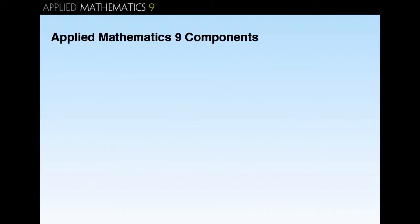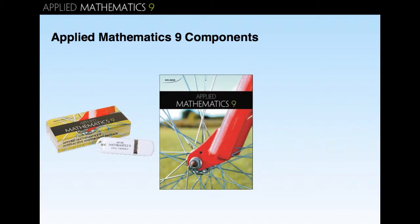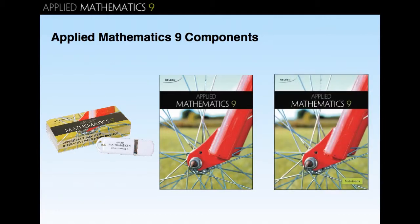Applied Mathematics 9 consists of three components—an interactive whiteboard package, a student workbook, and a solutions book.